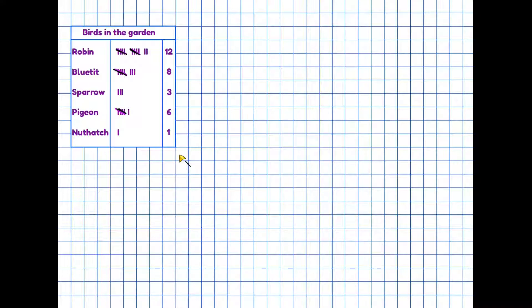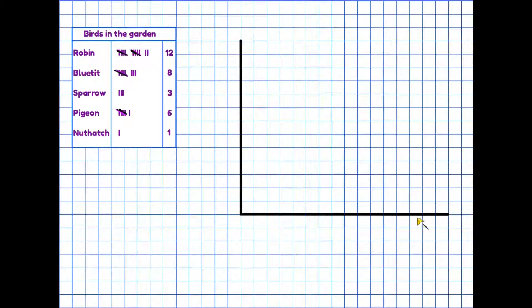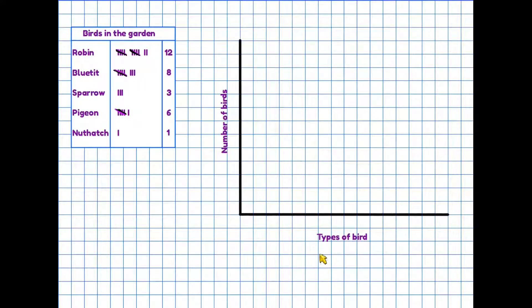The important thing is that a bar chart has a number of different parts to it and we need to make sure that we include everything. So let's make a start. Firstly, we have these two lines and all bar charts have similar lines. We are going to put labels on each of these lines to tell the reader what the information is that we are displaying. The first two labels tell us along the bottom about the different types of bird that we've seen in the garden, and the label at the side tells us the number of each bird.